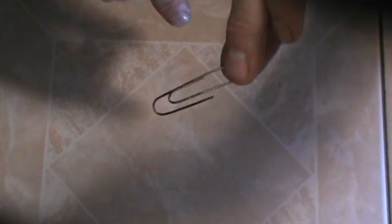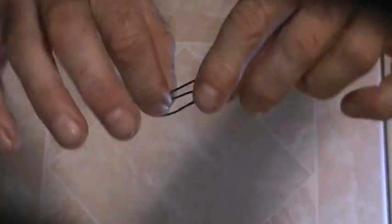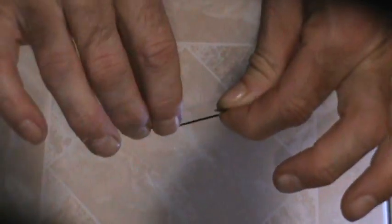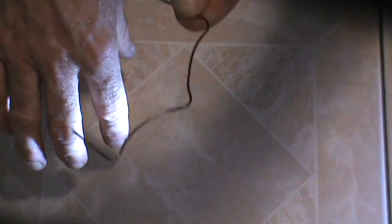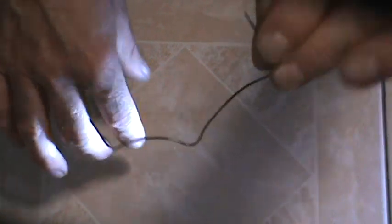So here we have a paper clip, as you can see. You know it's a paper clip, I know it's a paper clip. If we were to unbend the paper clip, we would have a piece of wire. If we showed this to anybody and said what is this, they would say it's a piece of wire.